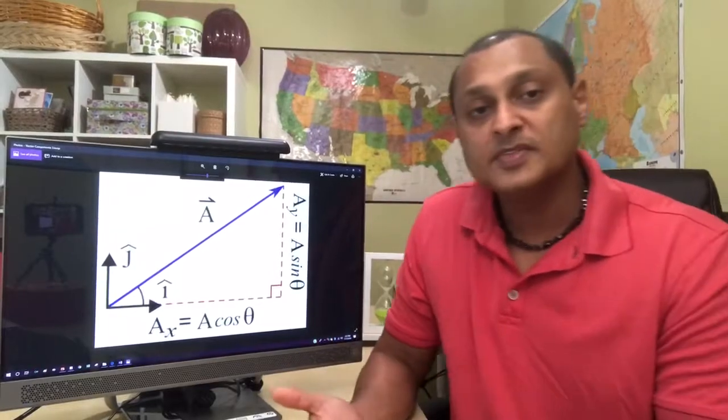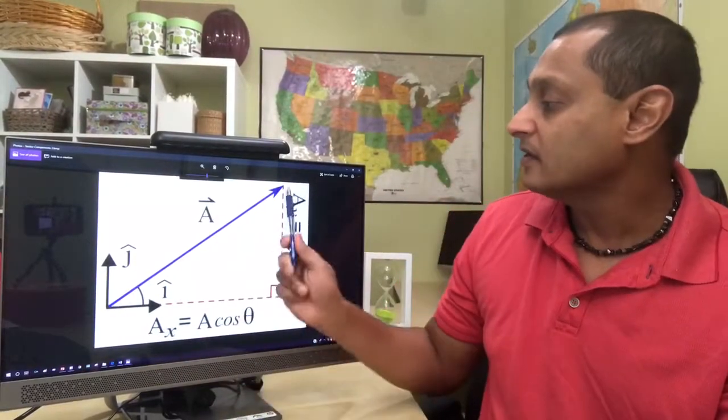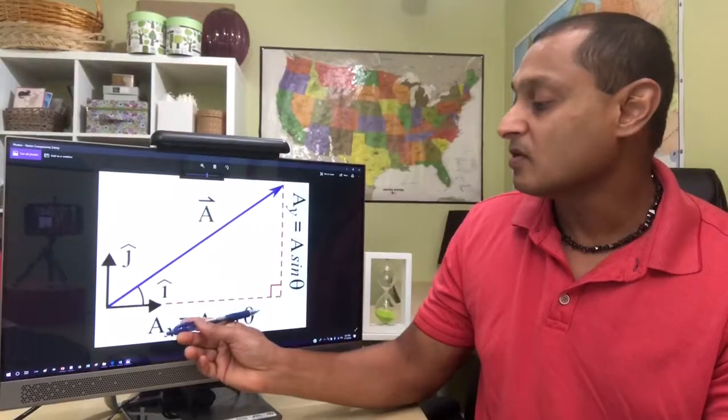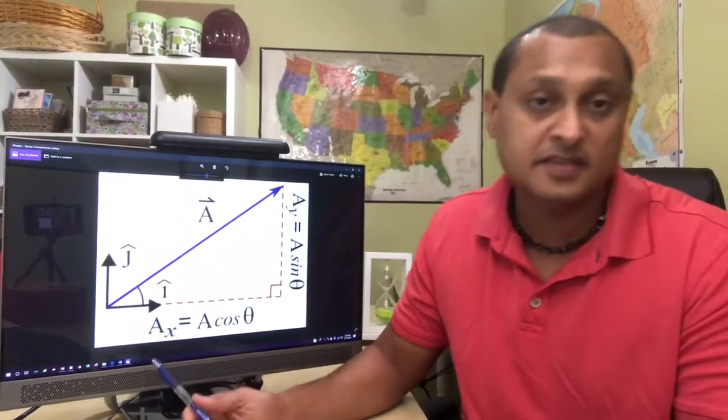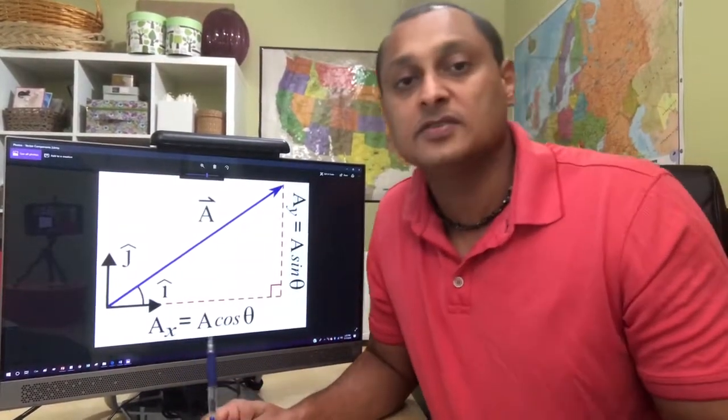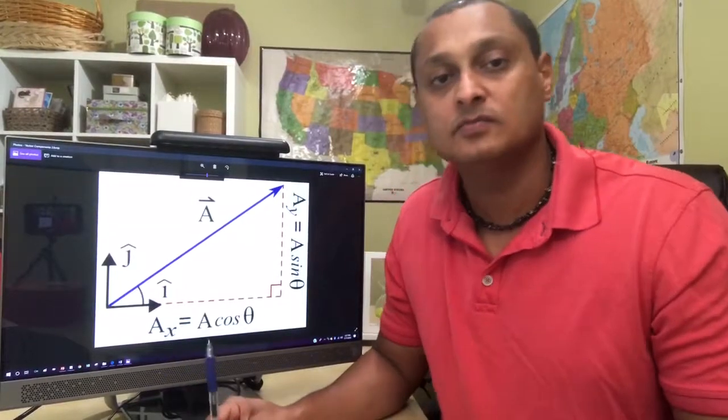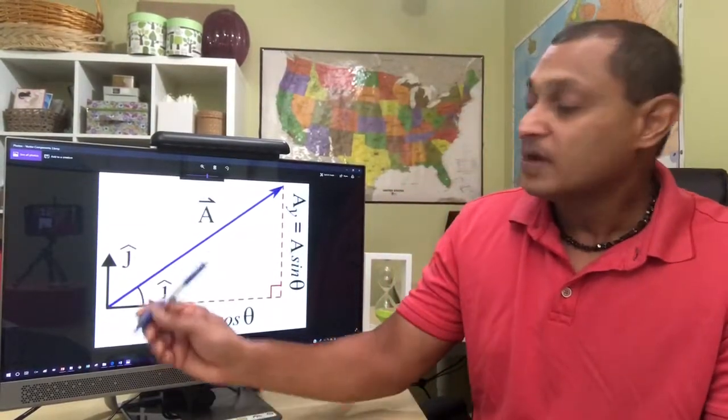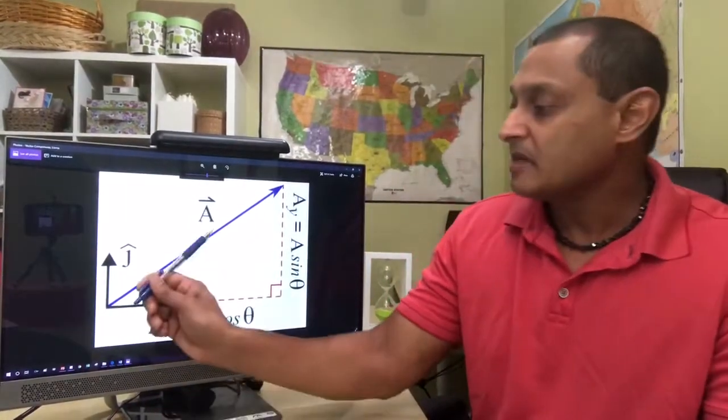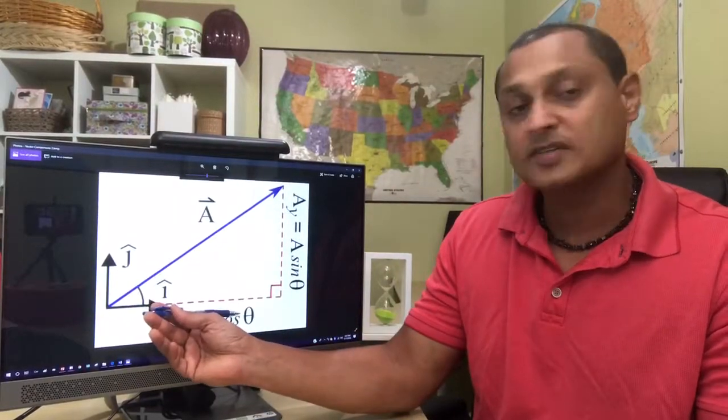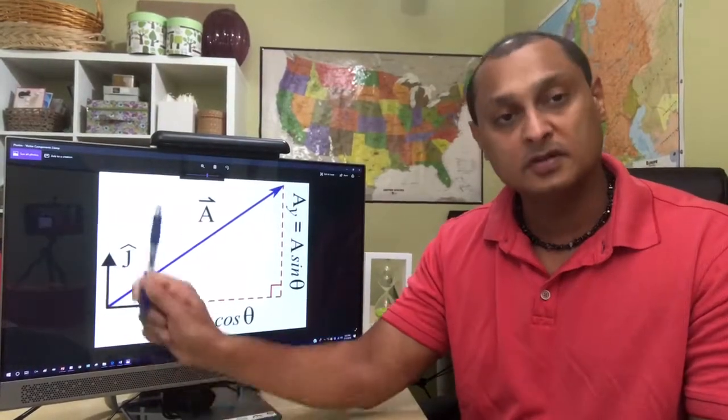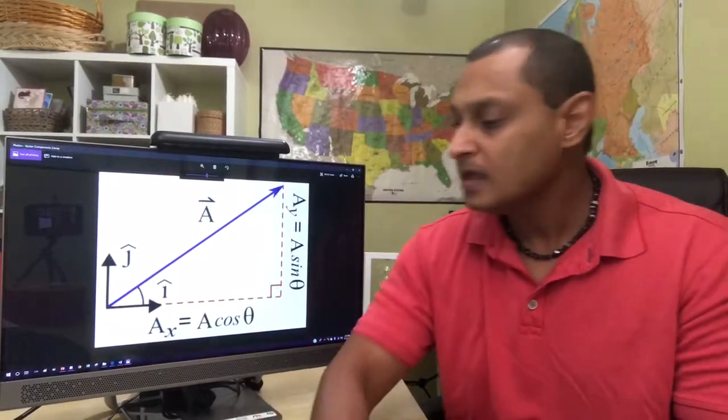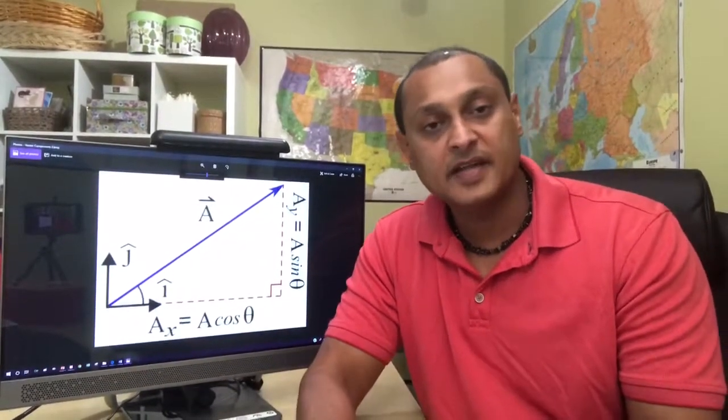So, we can represent a vector by a line with an arrow like this. And each vector can be broken down into two components. If it's a two-dimensional vector, there are three-dimensional vectors as well, which we'll get to later on. But for a simple two-dimensional vector, it can be broken down into its x component and into its y component, the vertical part.